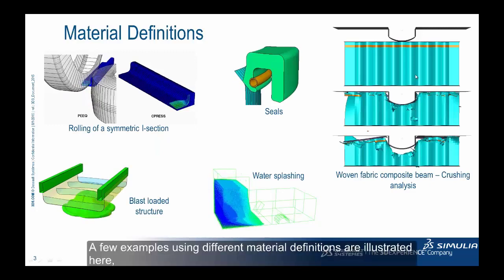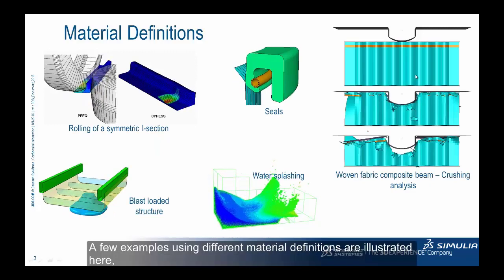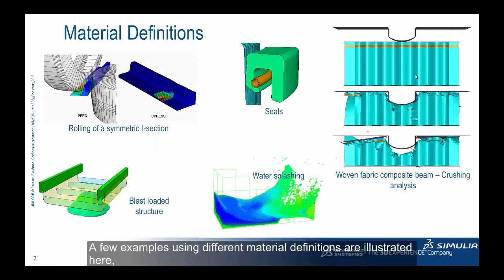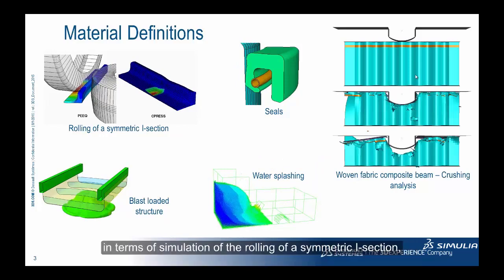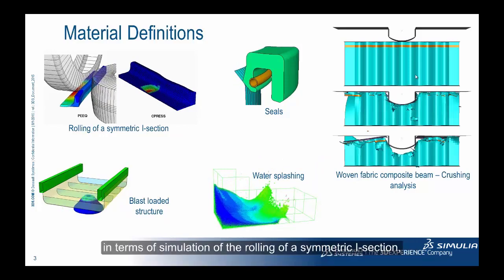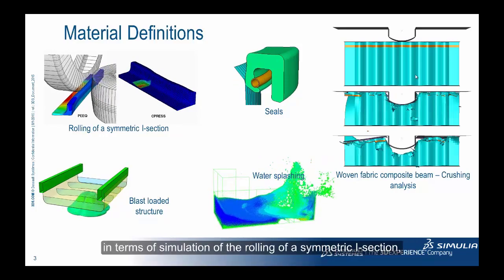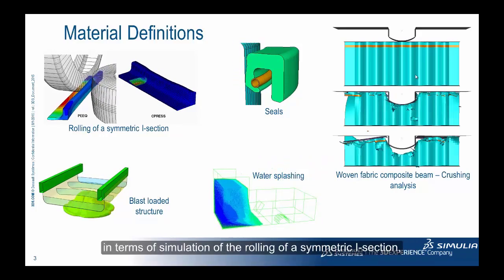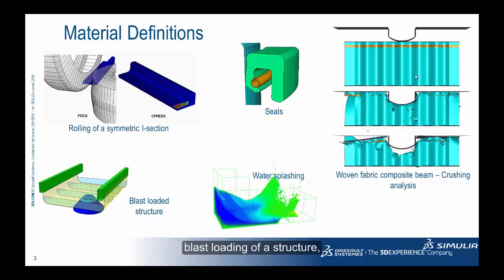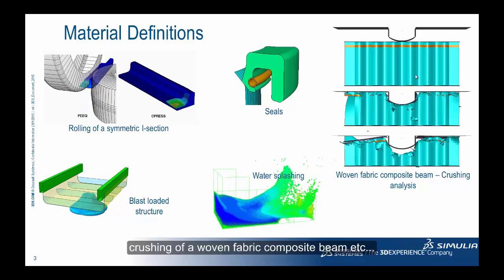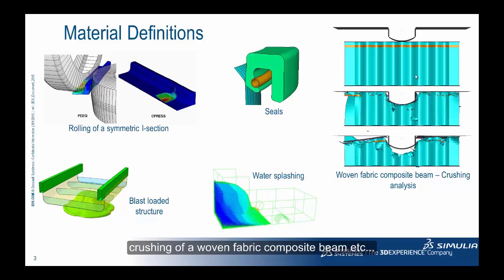A few examples using different material definitions are illustrated here in terms of simulations of the rolling of a symmetric I-section, blast loading of a structure, crushing of a woven fabric composite beam, etc.